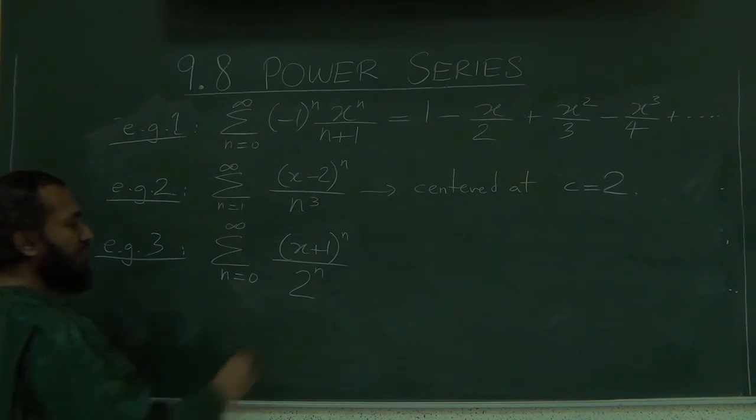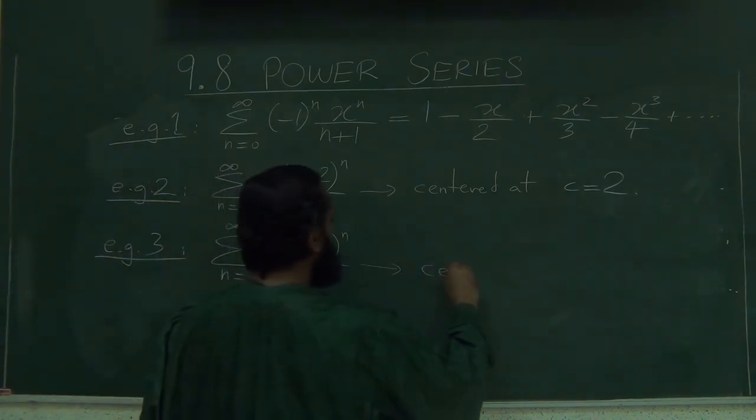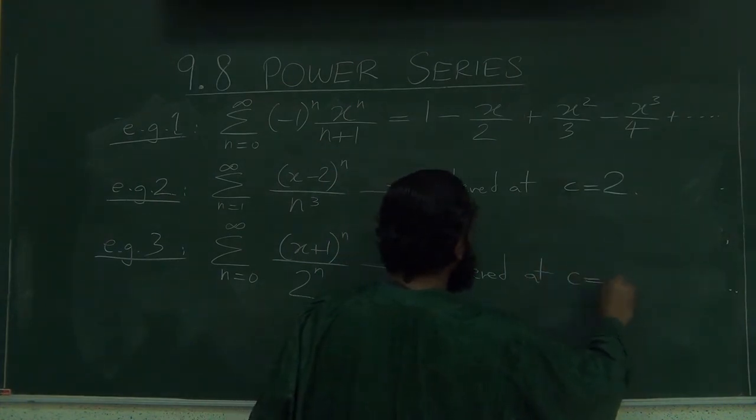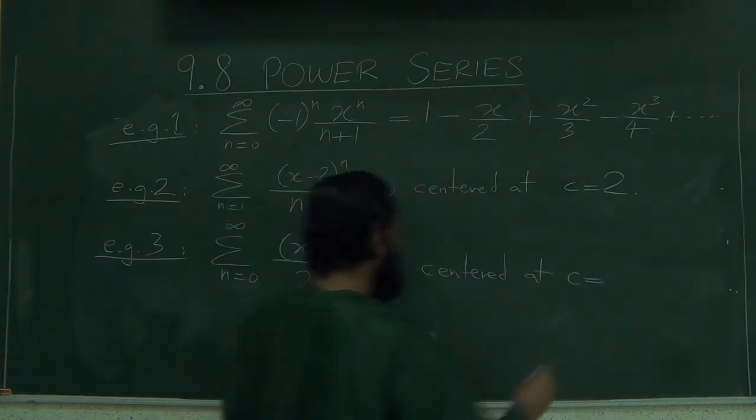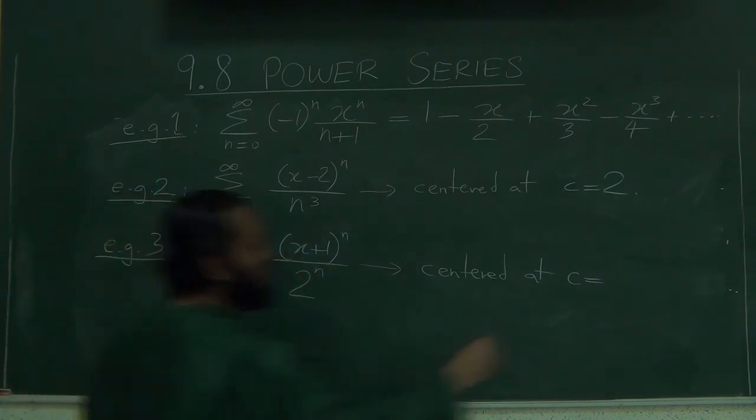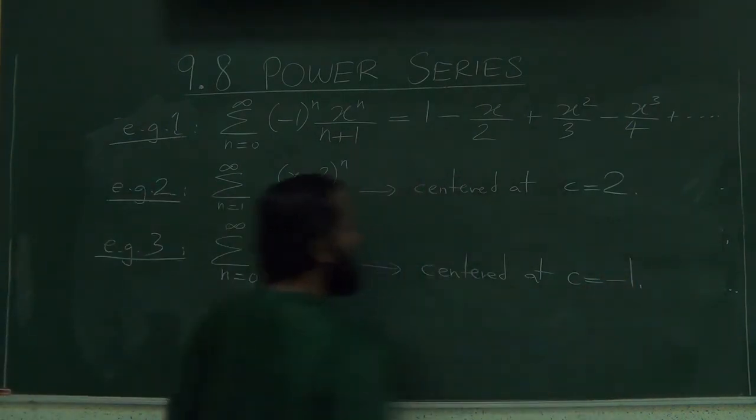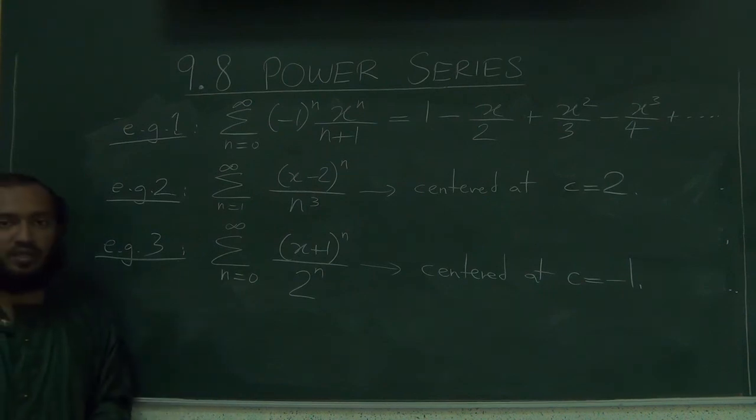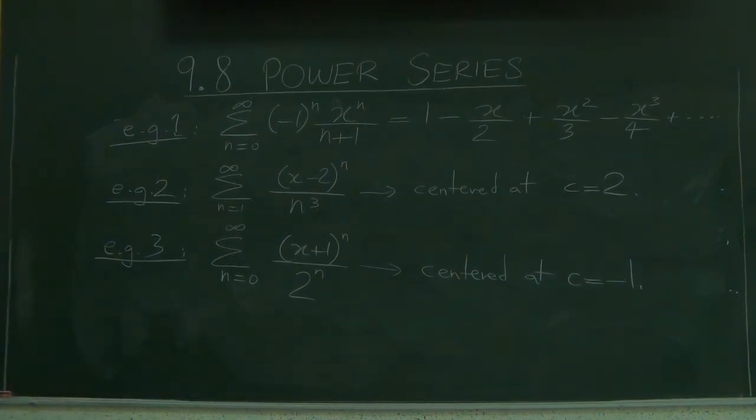Let's look at this series. What do you think this is centered at? This is centered at C equals, this is x minus minus 1, so this is centered at x equals minus 1. So these are some examples and the next lecture we will talk about convergence of power series.